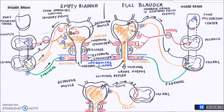At the same time, the hypogastric nerve will also activate the alpha-1 receptors on the internal sphincters, causing contraction, which further helps us retain urine. The micturition center senses the low volume of urine and sends impulses to activate the hypogastric nerve and the pudendal nerve. The pudendal nerve activates the nicotinic receptors on the external sphincters, causing them to contract, also helping retain urine. The efferent pelvic nerve is inhibited, so the M3 receptors are not activated, causing relaxation of the detrusor muscles and helping us retain urine inside the bladder.